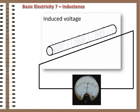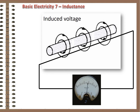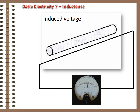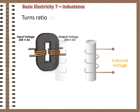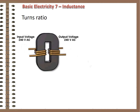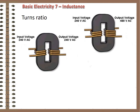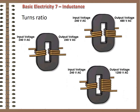If another conductor is placed in that moving field, the field will separate charges in the conductor, creating voltage and the potential for current flow without any direct contact. If one coil supplied with AC is placed adjacent to another coil, voltage is induced in the second coil by the movement of the magnetic field. The level of voltage induced is directly proportional to the ratio of conductor lengths between the two coils.